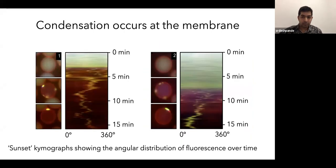You can see that here again, in two examples that the condensates are really kind of flattened at the membrane. And I like to show this, what I call sunset kymographs, which show the angular distribution of fluorescence over time. And you can see that at the start, you have a homogeneous fluorescence, but once the condensation is triggered, you get this multiple trails, which very quickly merge into a single trail. And the same thing happens here, in this beautiful sunset kymograph.